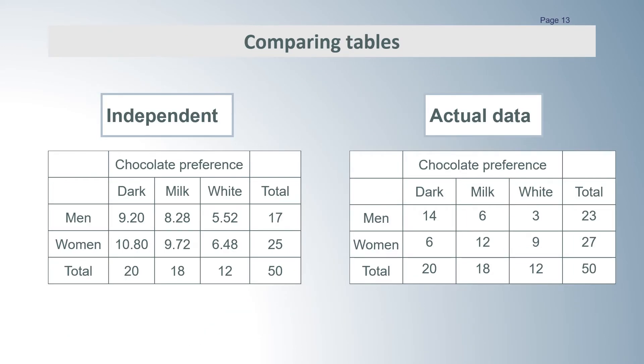Now we can compare the two tables. You can see that there is quite a difference. So if we were just using descriptive statistics, we would say that the men in our group preferred dark chocolate and the women in the group prefer milk chocolate.